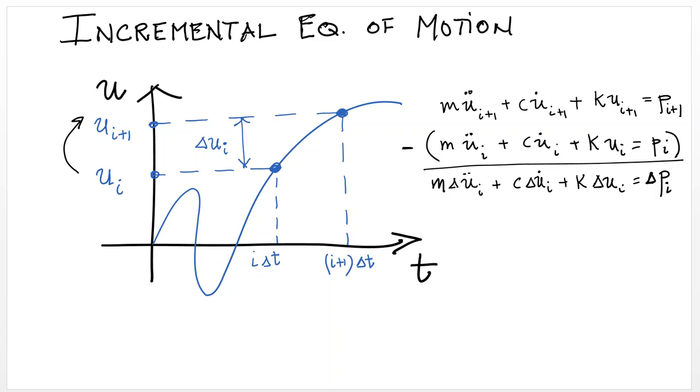So how do we solve these nonlinear dynamic equations? The most common approach is to use an incremental formulation, where we write the equation of motion at two different consecutive time steps, take their difference, and we end up with what is known as the incremental form of the equations of motion.